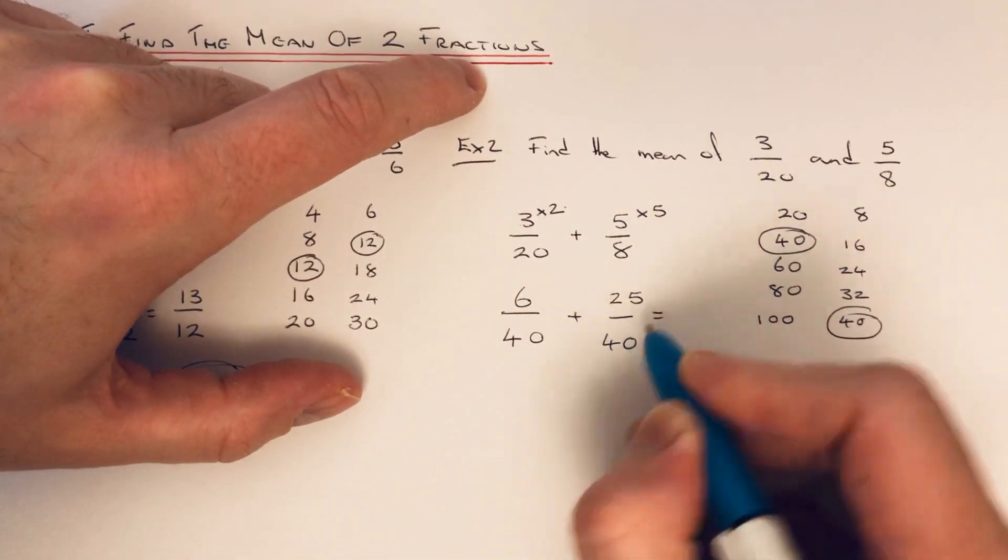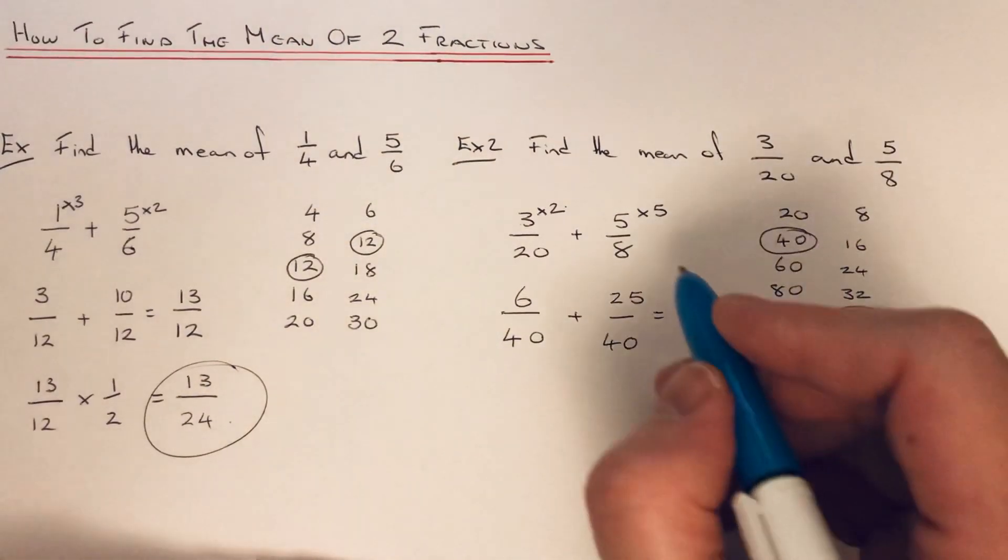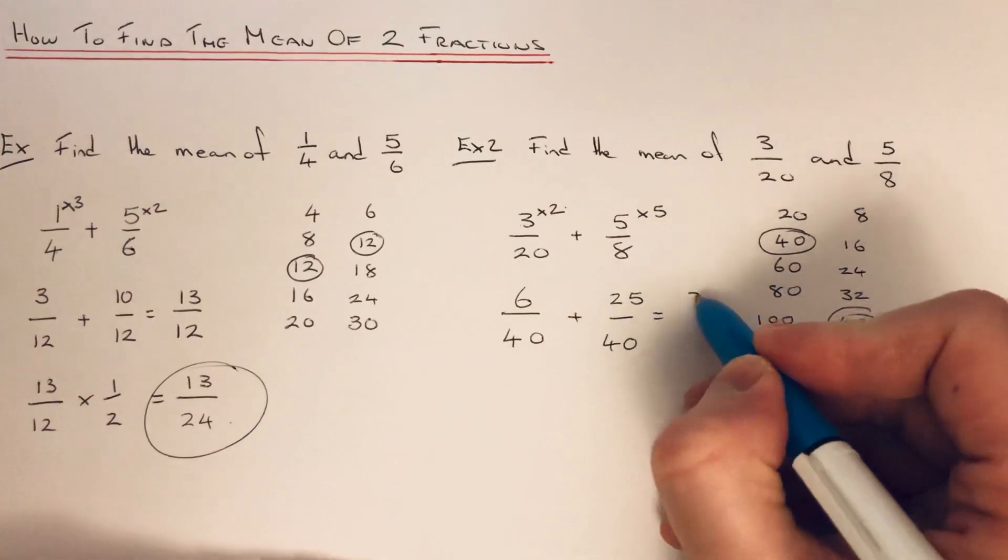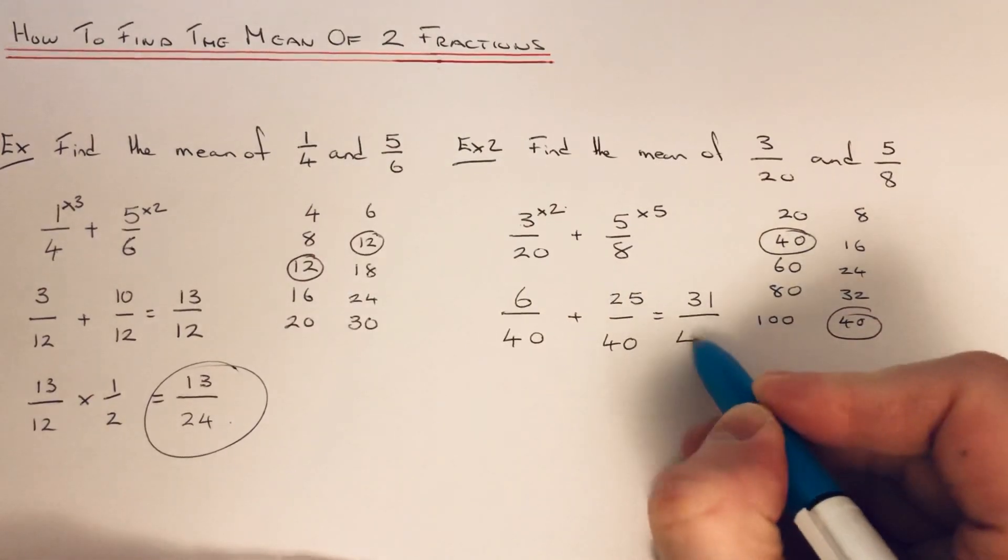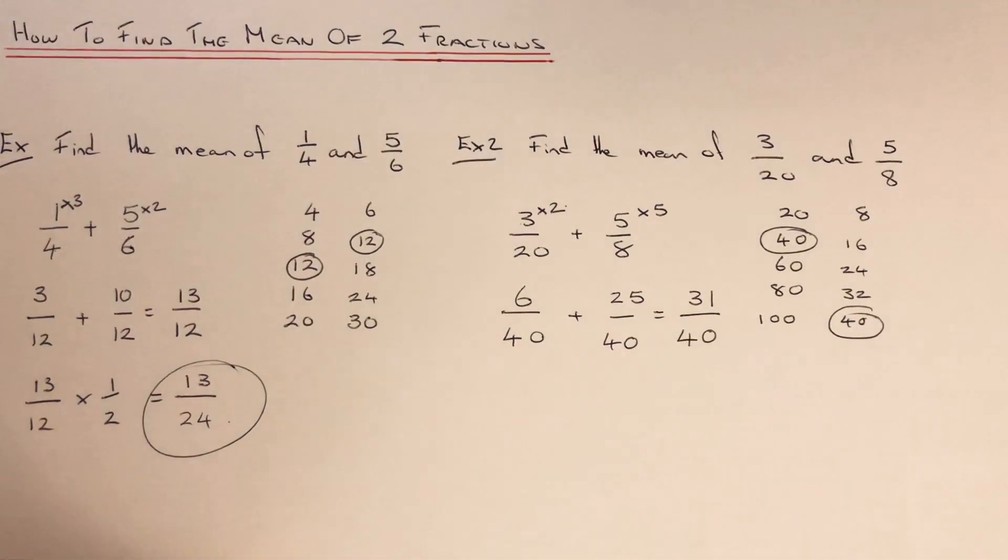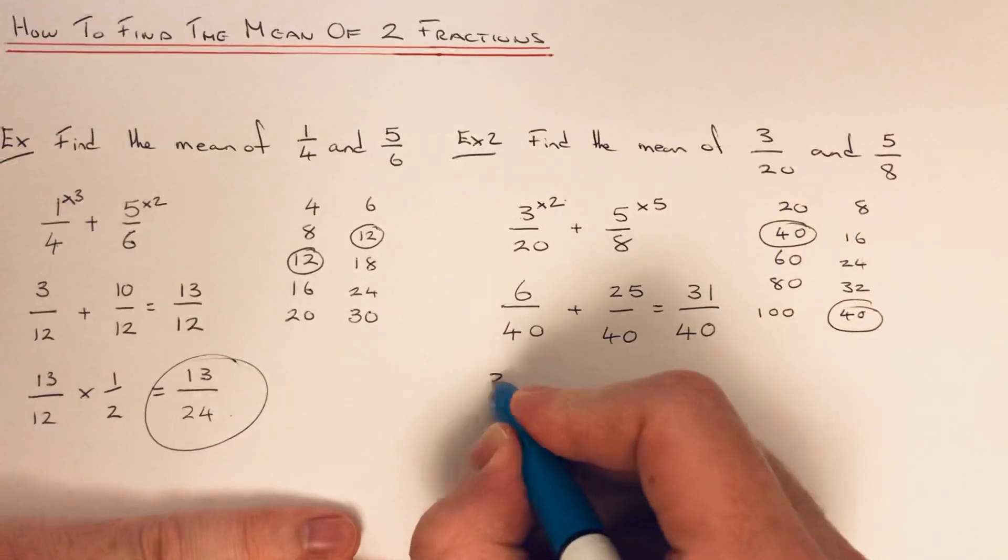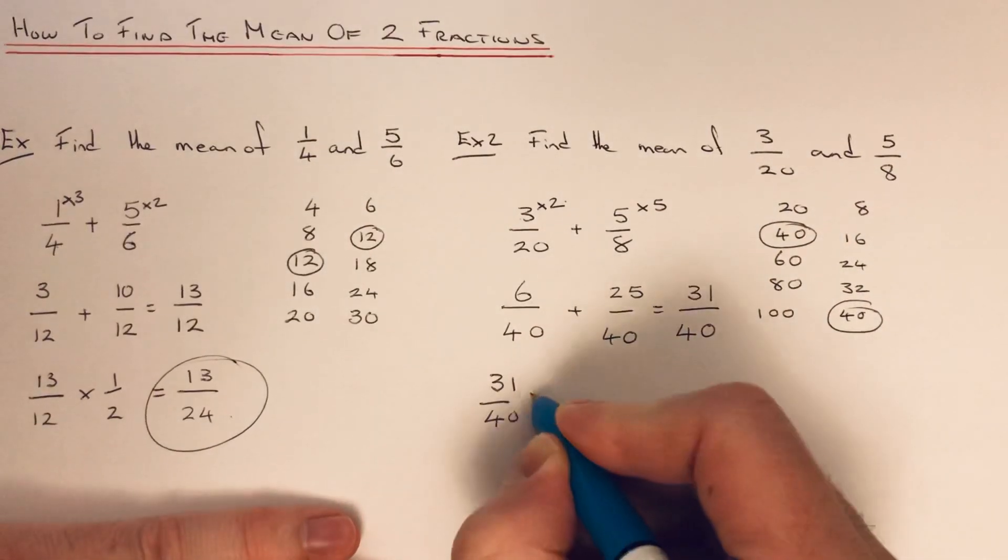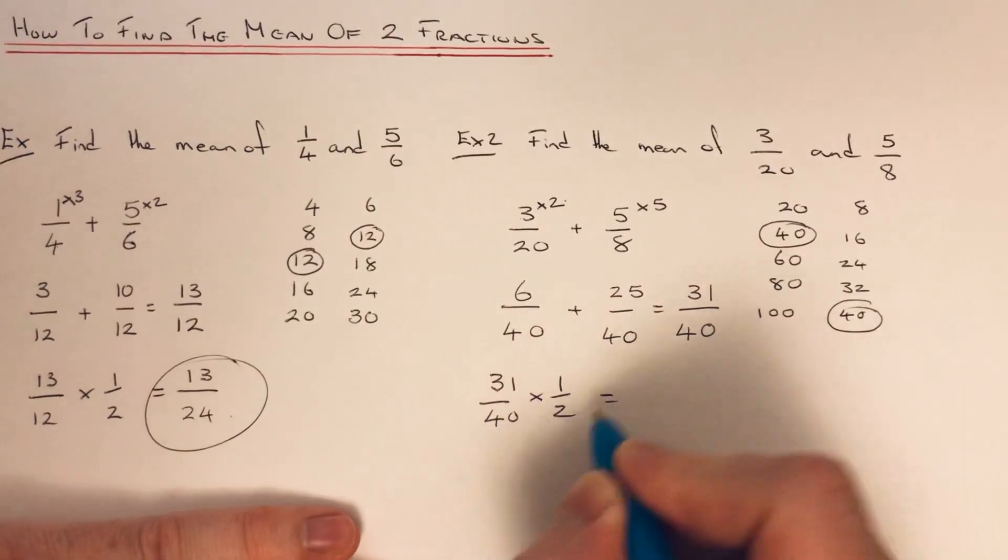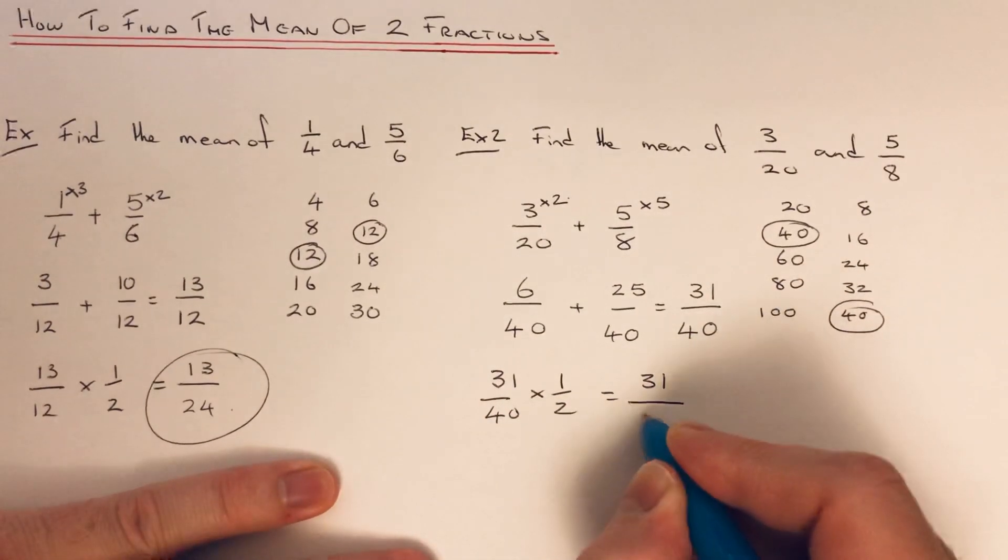So we can now add the fractions together because we have a common denominator. So 25 add 6 is 31, keep the bottom number the same. So again, we just need to divide the answer by 2. Quickest way is to times that answer by 1/2. So 31 times 1 is 31, 40 times 2 is 80.